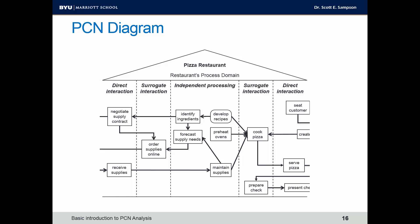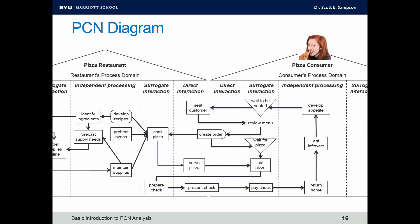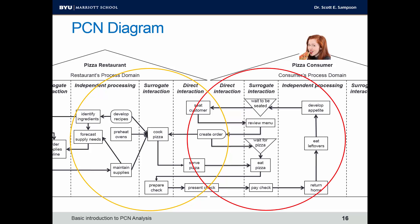Let's go back to our PCN diagram for the restaurant. This shows just one entity, but service processes always involve more than one entity. We can see another entity — a supplier — that has its own process domain with steps that interface with the restaurant's process domain. There's also the customer, who has their own process domain. In the customer's process domain, the customer is doing things such as developing an appetite, coming to the restaurant, waiting to be seated, and so forth. After the experience, they return home and eat leftovers. So the restaurant has steps in their domain, the customer has steps in their domain, and in between are the steps shared between the process domains — which is really the essence of managing a service operation.